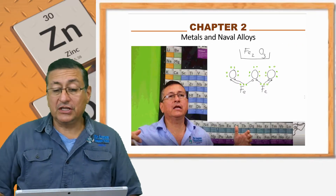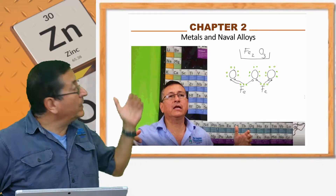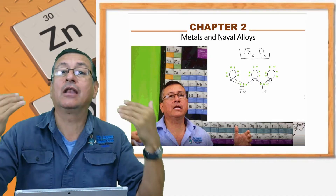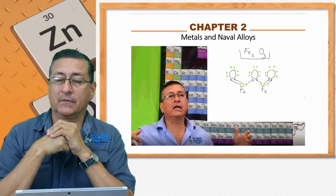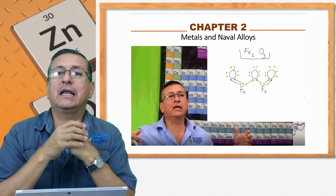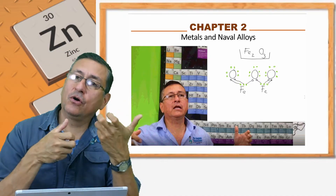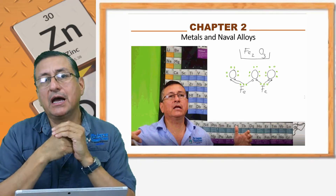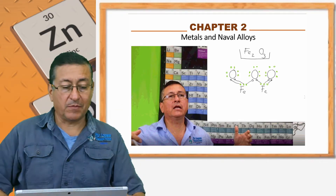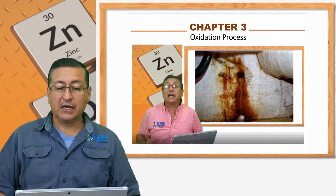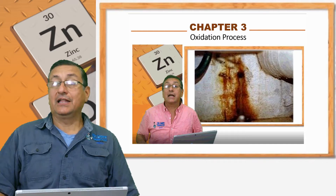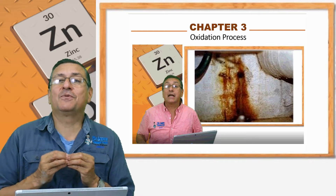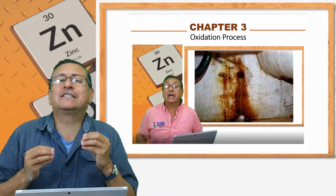In Chapter 2, we are going to cover metals and naval alloys. We are going to analyze the different types of alloys recommended in the marine environment and metals appropriate for the marine environment. In Chapter 3, we are going to start with the process of oxidation.